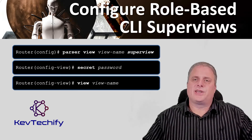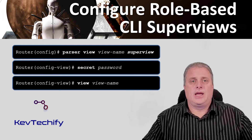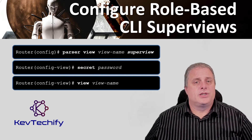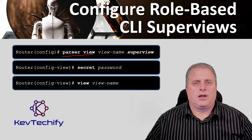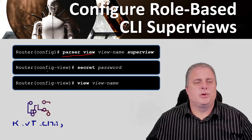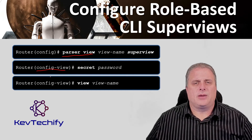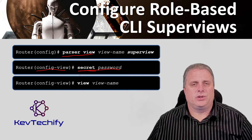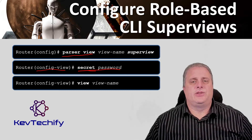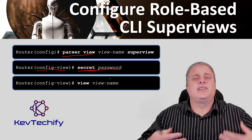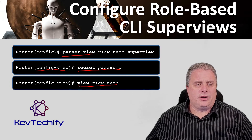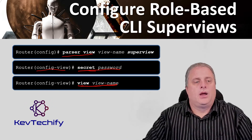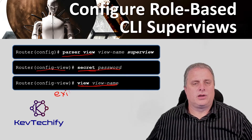The steps to configure a super view are essentially the same as configuring a CLI view, except that the view name command is used to assign CLI views to a super view. Step one: create the view using the parser view command to enter super view configuration mode. Step two: assign a secret password using the secret command to protect access to that super view. Step three: assign an existing CLI view using the view command followed by the view name you created earlier. Step four: exit out of configuring your super view.